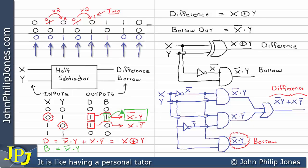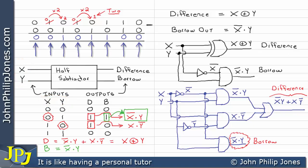In this video I've used x and y as the inputs. In previous videos in this playlist I've used a and b — it doesn't really matter. The reason I used x and y here was to avoid confusion with b for the borrow output. But in many textbooks you will see this expressed with a and b as inputs, and the borrow output written as B-out, meaning borrow out.